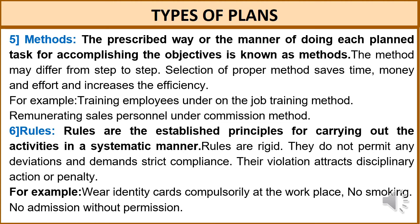For example, a company may fix its employees' superannuation at the age of 60 years as the retirement age. Rules do not specify a sequence of actions.